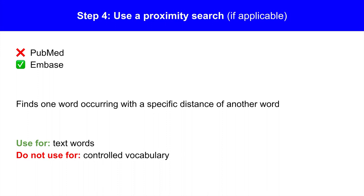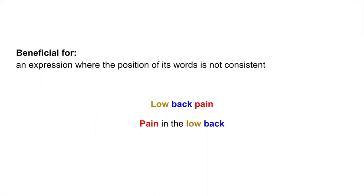Step 4: If applicable, use a proximity search. Proximity searching is not available in PubMed, but you can use it in Embase. This search finds one word occurring within a specific distance of another word. Use proximity searches for text words and not for controlled vocabulary terms. Proximity searching is beneficial for expressions where the position of words is not consistent. For example, 'low back pain' could also be expressed as 'pain in the low back.' Both expressions have low, back, and pain in common, but the word order and adjacency are different.